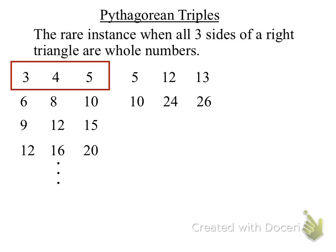Same thing with 5, 12, and 13. If I take any multiple of those three, I will get a Pythagorean Triple. If I multiply everything by 2, I'll get the second row. If I multiply everything by 3, I'll get the third row.